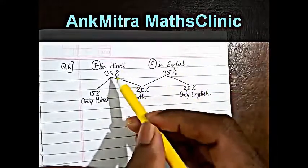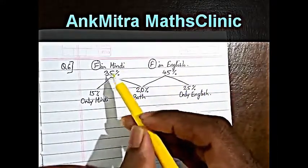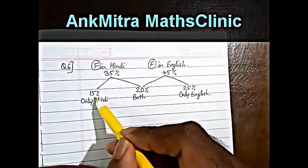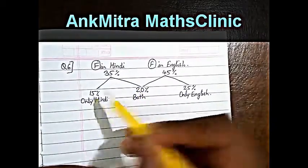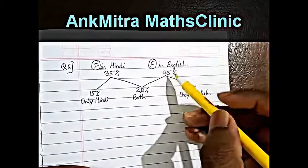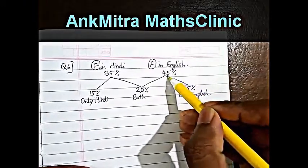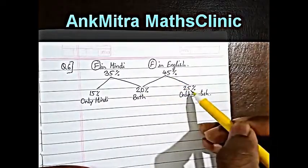So the number of students that failed only in Hindi will be 35% minus 20%, which is 15%. Similarly, the percentage of students which failed only in English will be 45% minus 20%, which comes to 25%.